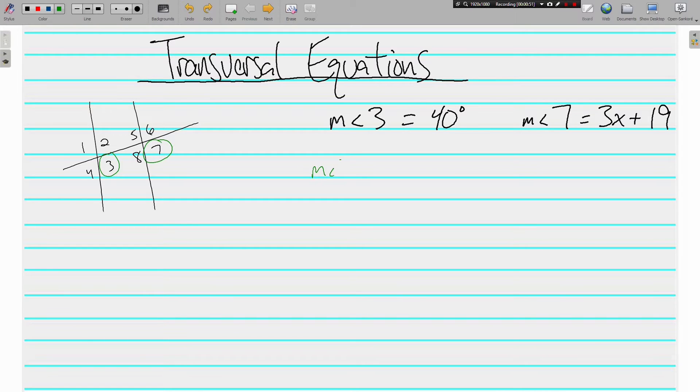So, what that means is angle 3 is congruent, which is just the geometry word for equal, to angle 7. Angle 3 is 40 degrees, and angle 7 is 3x plus 19. Save the term with the variable for last. So, undo by subtracting 19 from both sides, and we get 21 is equal to 3x. Divide both sides by 3, and we're able to solve and get x is equal to 7.